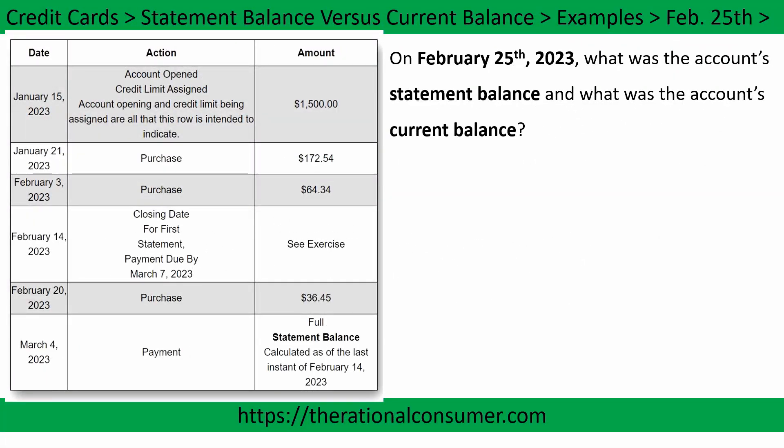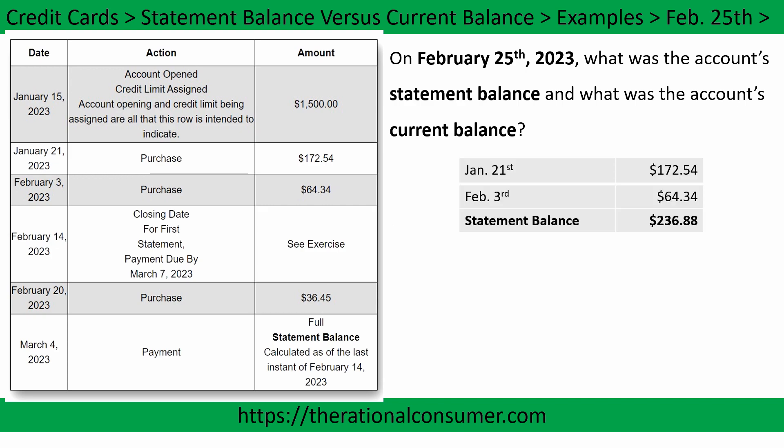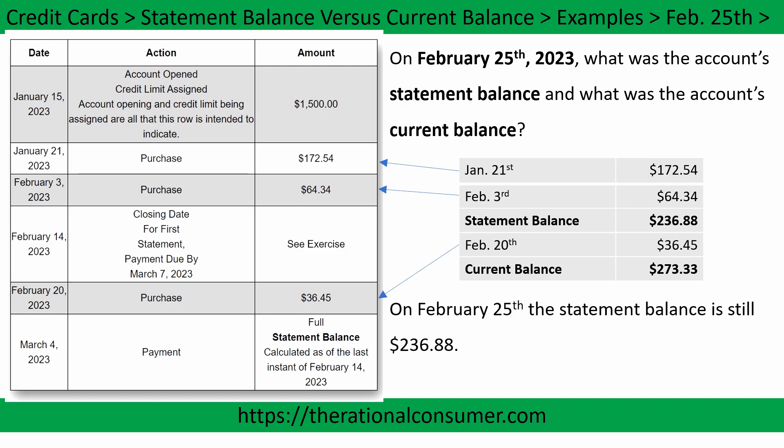On February 25th, 2023, what was the account's statement balance and what was the account's current balance? We have the January 21st charge for $172.54 and the February 3rd charge for $64.34, for a total of $236.88 for the statement balance. And on February 20th, we add $36.45 to that to get a current balance of $273.33. On February 25th, the statement balance is still $236.88 and the current balance is $273.33.